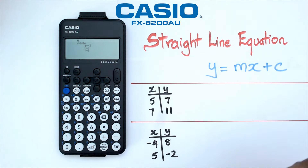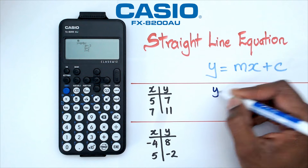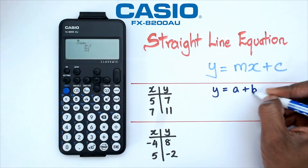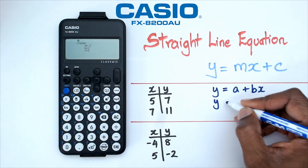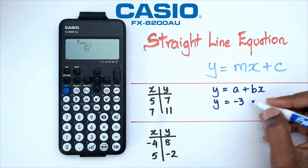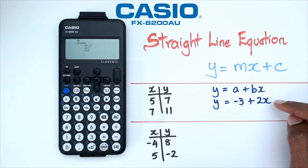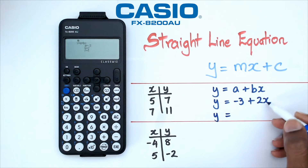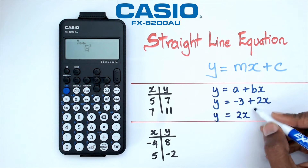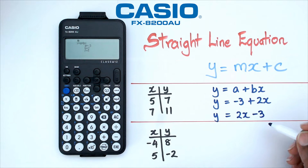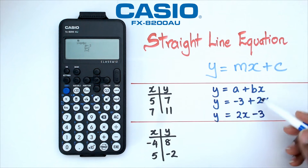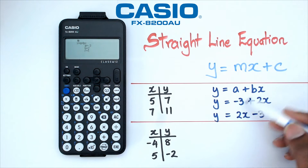So we're going to write that down. We can say that y is equal to a, which happens to be minus three, plus b, which happens to be two x. But normally when we write straight line equations, we write it in the format of y equals mx plus c. So all we're going to do is move the two x, and the minus three is going to be your c value. Anytime you have a number in front of the x, that's your gradient, which is m, and the number by itself is the constant, which is c. So we rewrite this equation as y equals two x minus three.